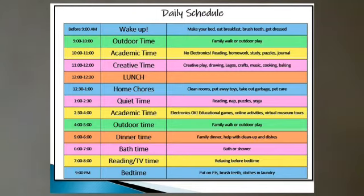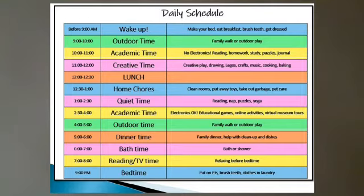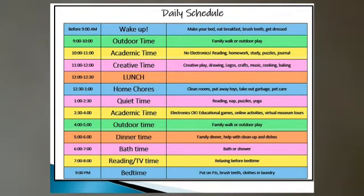The first bar shows the hours. You can read from the green bar all the way over to the gray bar — that represents all the time of one day, a whole day. The second bar shows: wake up, outdoor time, academic time, creative time, lunch, home chores, quiet time, academic time, outdoor time, dinnertime, bath time, reading, TV time, and bedtime.